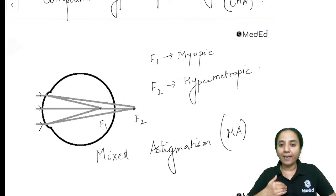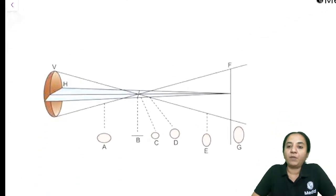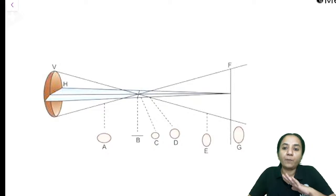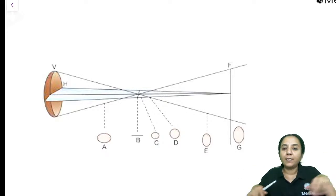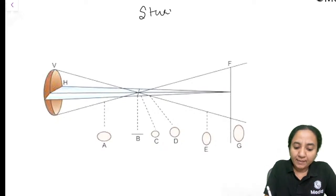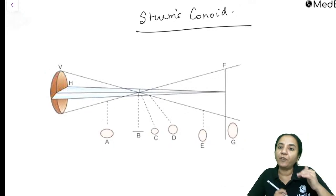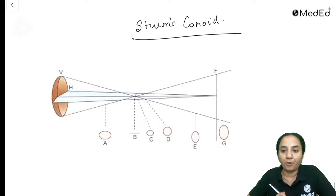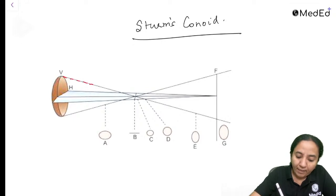The last picture is Sturm's conoid, which was asked in a recent NEET PG exam. In this image, all five types of astigmatism are displayed together. Rays refracting on the vertical axis meet at FV, and rays refracting on the horizontal meridian meet at FH. Multiple points — A, B, C, D, E, F, G — are marked along the axis, and each point represents a different refractive error depending on where the retina sits relative to FV and FH.